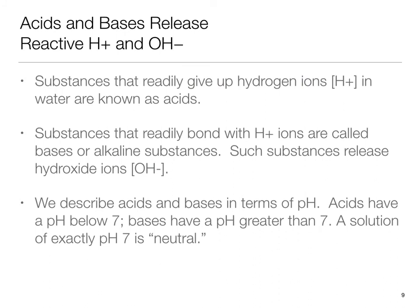Substances that readily give up hydrogen ions in water are known as acids. Hydrochloric acid, for example, disassociates in water to form hydrogen ions and chloride ions. Substances that readily bond with hydrogen ions are called bases, or alkaline substances. Sodium hydroxide, NaOH, for example, releases hydroxide ions, OH-, that bond with hydrogen ions in water.